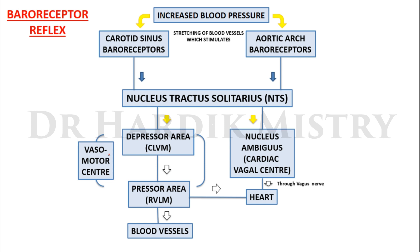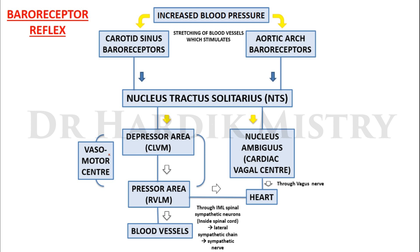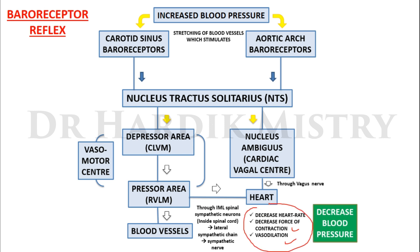From the pressure area, inhibition is transferred to the heart and blood vessels through intermediolateral spinal sympathetic neurons, present inside the spinal cord, lateral sympathetic chain, and sympathetic nerve. This results in decreased heart rate, decreased force of contraction, and vasodilation. When all three occur, there is a decrease in blood pressure — normalizing the elevated blood pressure.